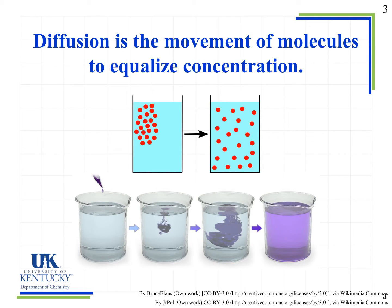An easy way to represent this is to think about a solution which you add food coloring to. Initially the food coloring is very concentrated in one region. Over time, even if we don't mix it, the molecules will move on their own and distribute out among the other water molecules until eventually the concentration of those solute molecules is the same throughout the entire solution.